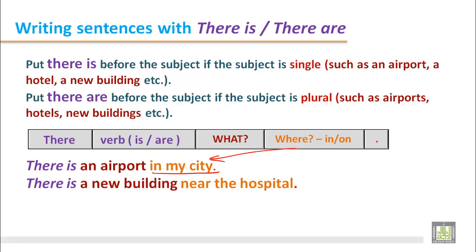The second sentence: There is a new building near the hospital. A new building is a singular noun, so we put there is. Where is the new building? We find the answer for where: near the hospital.